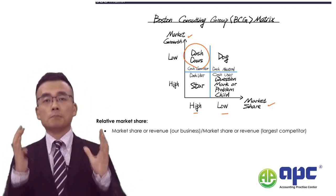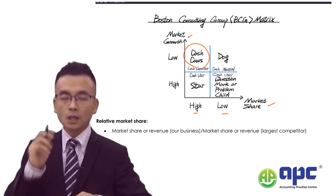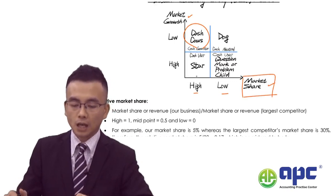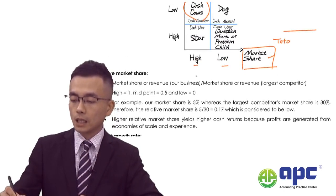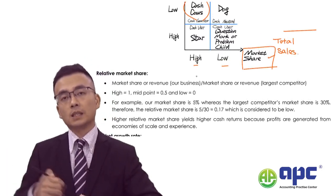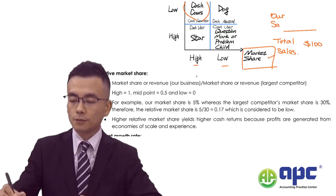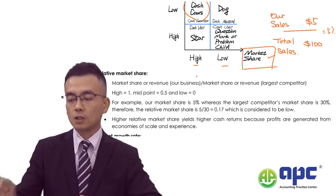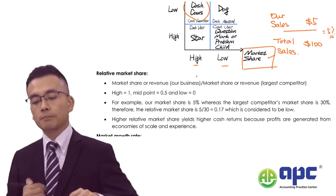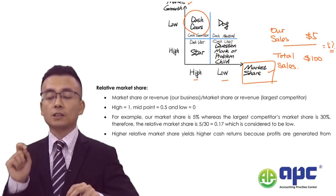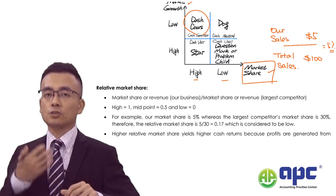It is almost impossible for many businesses to always have a Cash Cow in hand, which is why they keep buying and selling shares in the marketplace. Regarding relative market share calculation: if total sales revenue in the market is $100 and our sales revenue is $5, that's 5% market share. In this particular exam, the examiner does not specify the relative market share calculation, so you can deem 5% as high or low as long as your explanation supports your claim — you can get full marks.